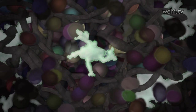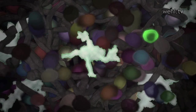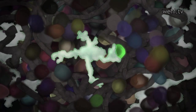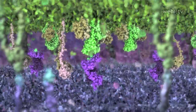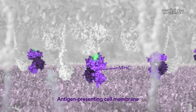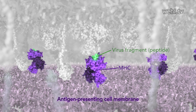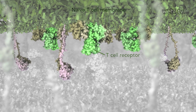Antigen-presenting cells inspect their environment and take samples back to nearby lymph nodes. Once in the lymph node, the antigen-presenting cells search for a T-cell that will recognize their cargo. By chance, this T-cell recognizes the cargo carried by this antigen-presenting cell. The recognition is controlled by molecular interactions between the cells. The antigen-presenting cell produces proteins called MHC on its cell surface. The MHC contains a virus fragment, also known as a virus peptide.